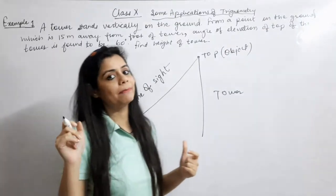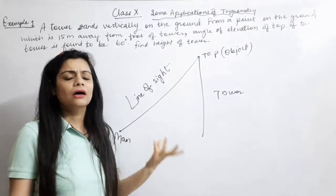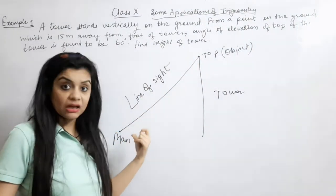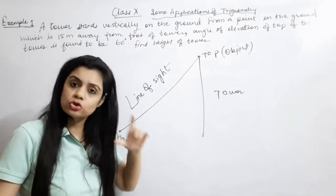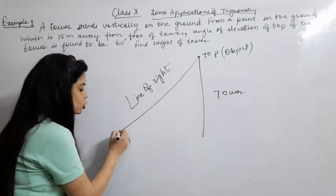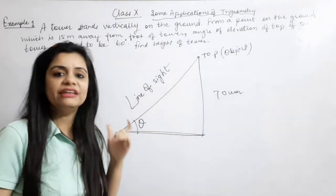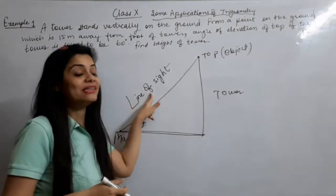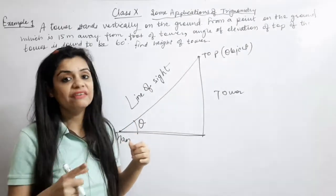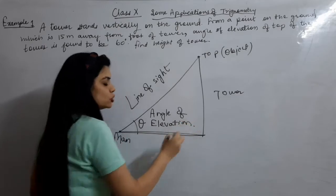Case study questions are coming in your exam. So in case study questions, this can also come in case study. What happens in line of sight? That from the object to the person, to the observer, which is a line, if you join that line, that line is called line of sight. And line of sight from the horizontal level, this horizontal level is that the angle is called angle of elevation. I repeat, line of sight or horizontal level, the angle is called angle of elevation. What do you call this? Angle of elevation.